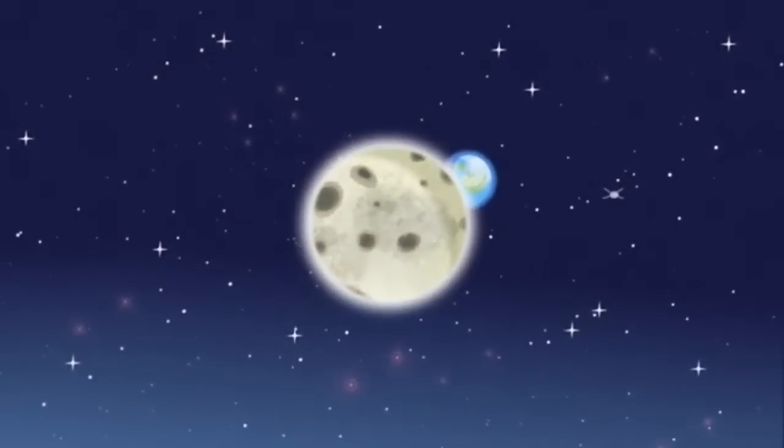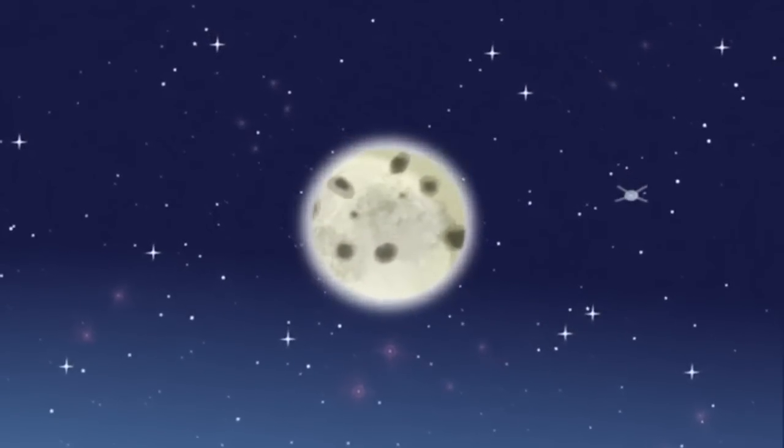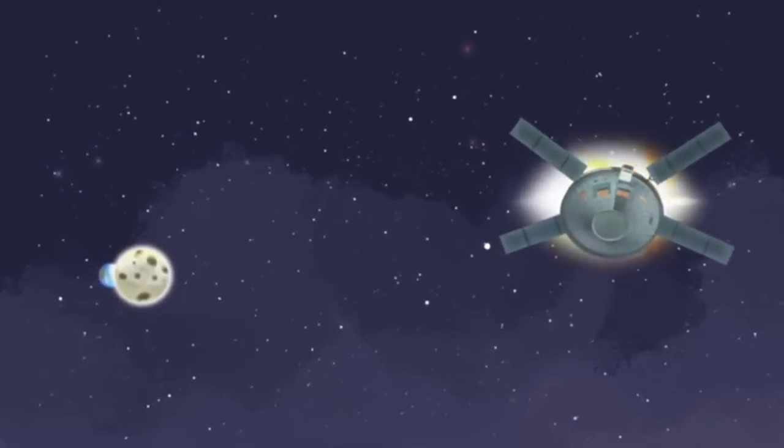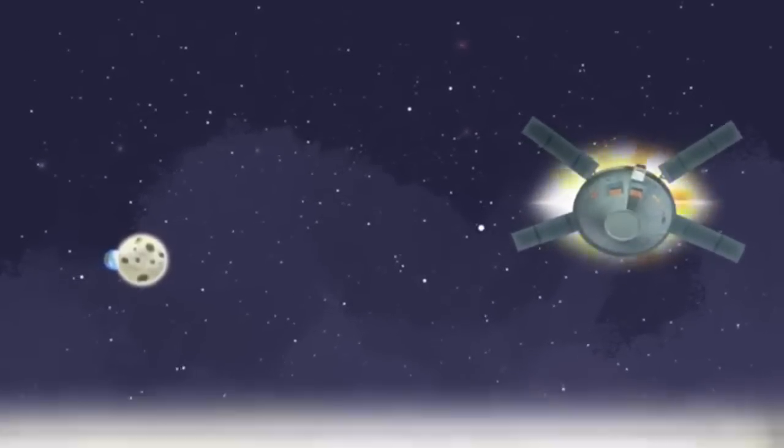Orion travels for five days to meet the orbit, 40,000 miles beyond the Moon. Once at just the right height, a second burn of the Service Module engines steadies Orion into DRO.